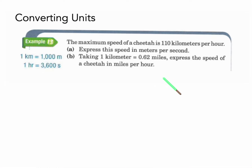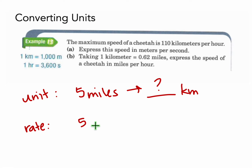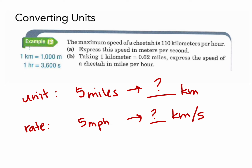Hi everyone, today we're going to talk about how to convert units. When someone says they need to convert a unit, they're basically changing a unit — like five miles — into a different way of measuring, like kilometers. Or they could ask you to change a rate. Converting units is used for distance, speed, volume, and length because in different places in the world we measure with different units, so it's a great way to talk about how one unit is equivalent to another.